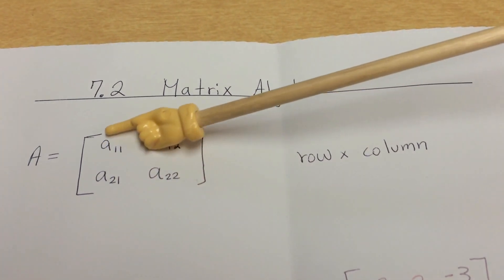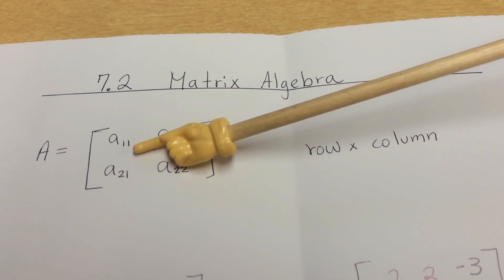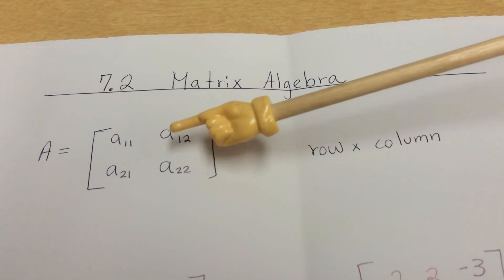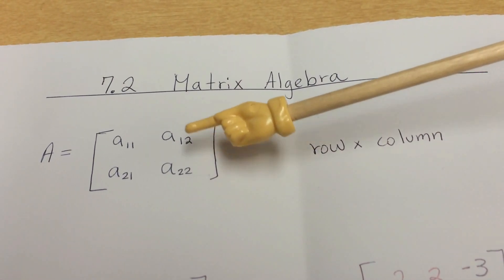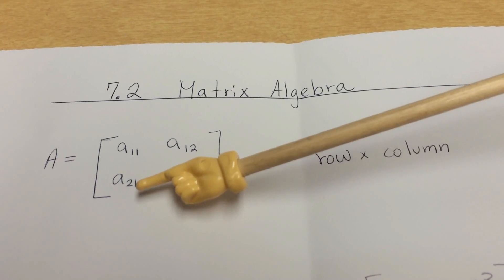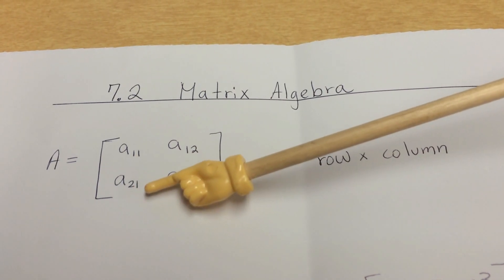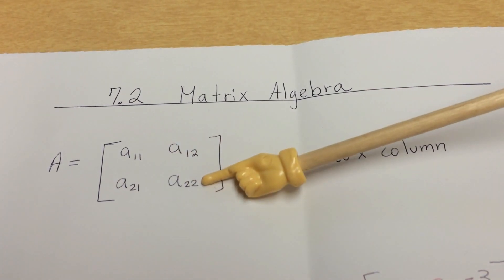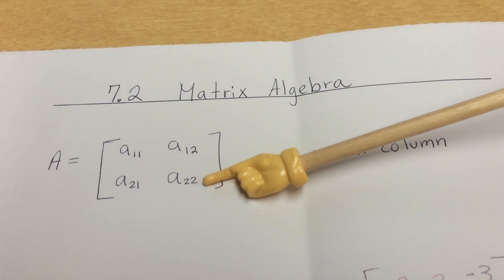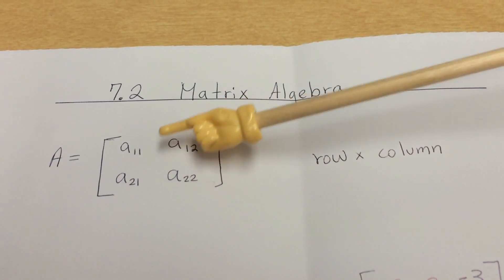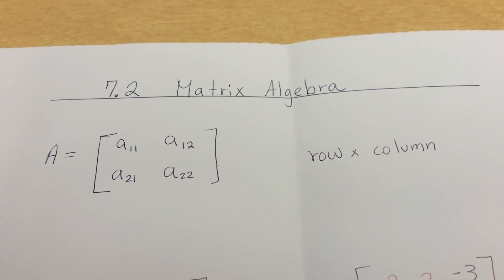The first spot is called the one-one position, representing the first row, first column. The next number is the first row, second column, so that's labeled one-two. Moving to the second row, first column gives us two-one, and the second row, second column is two-two. We'll use this notation when performing operations.